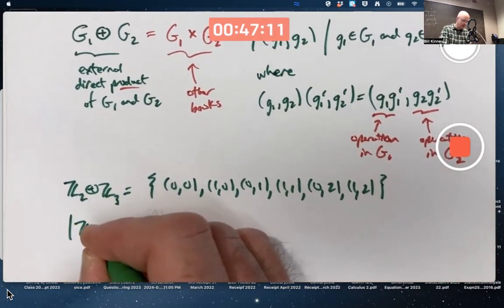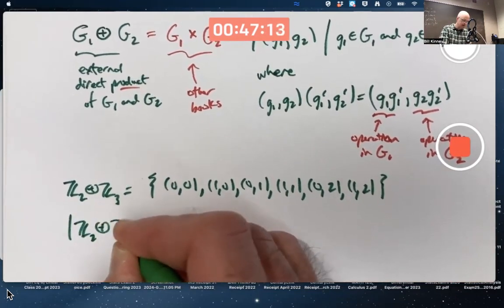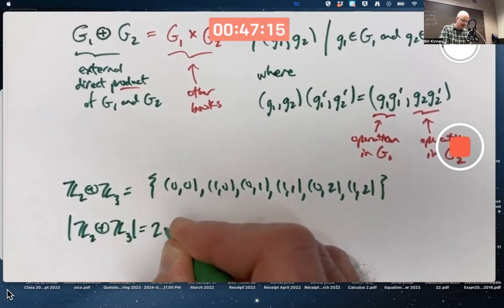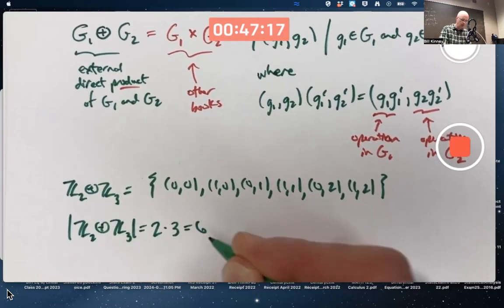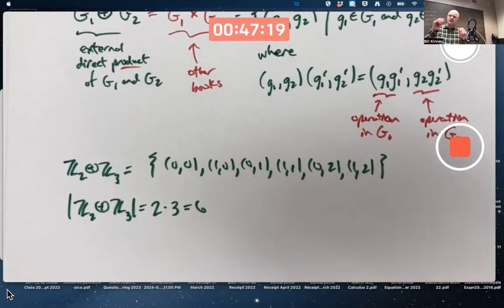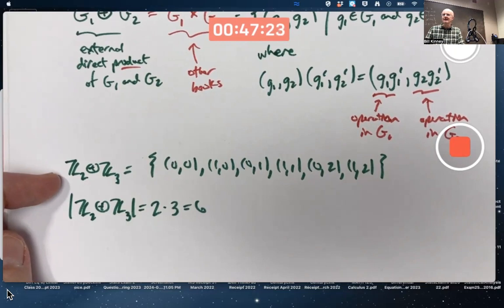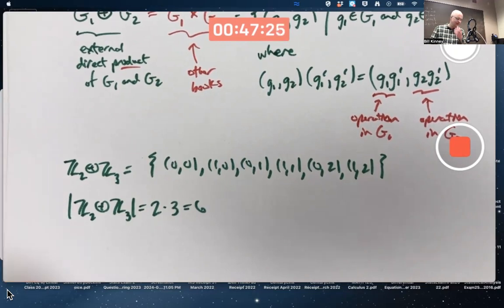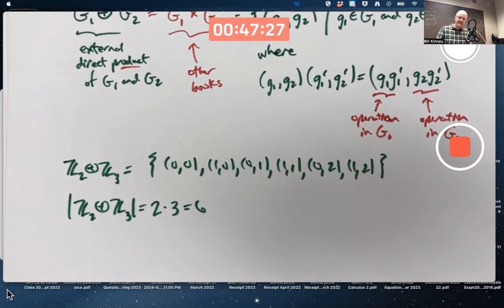The order of this external direct product is, in fact, the product of the orders of the individual factors. 2 times 3. It's got order 6.